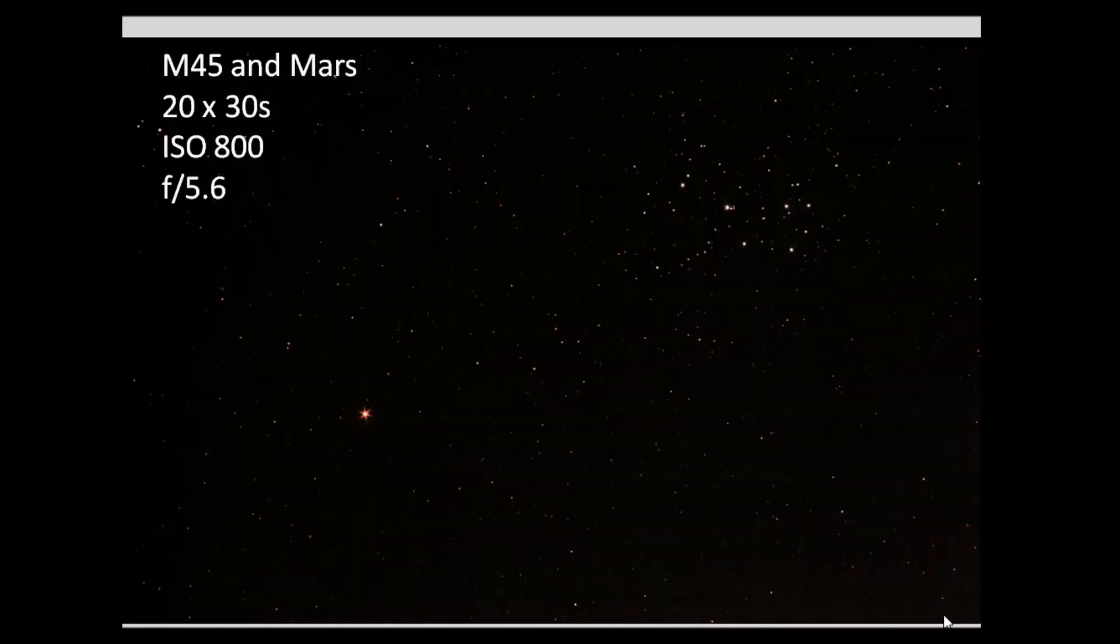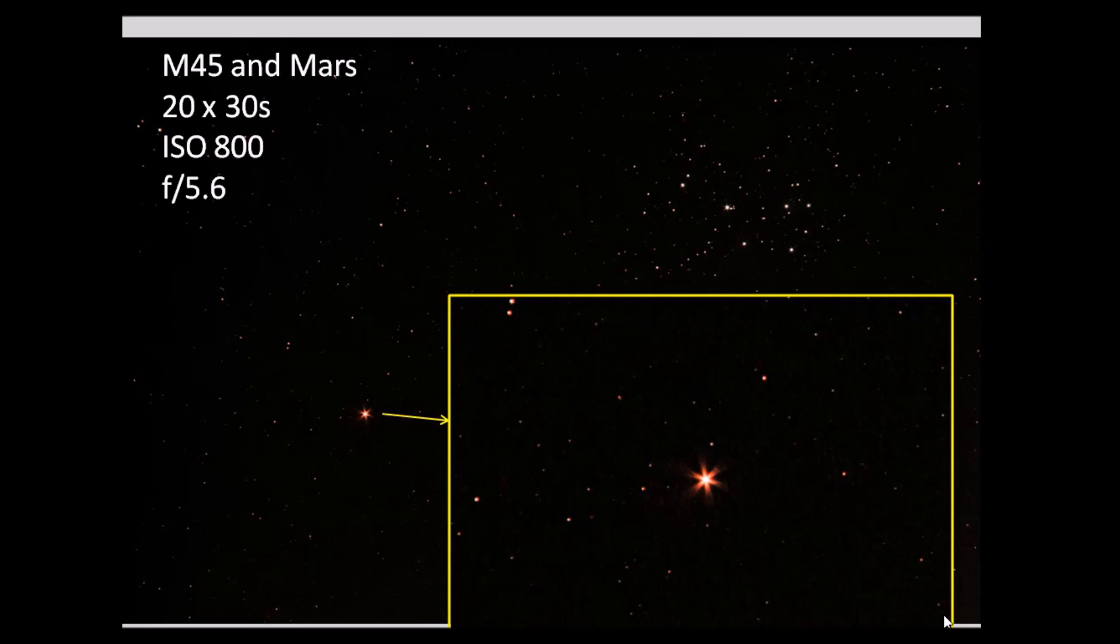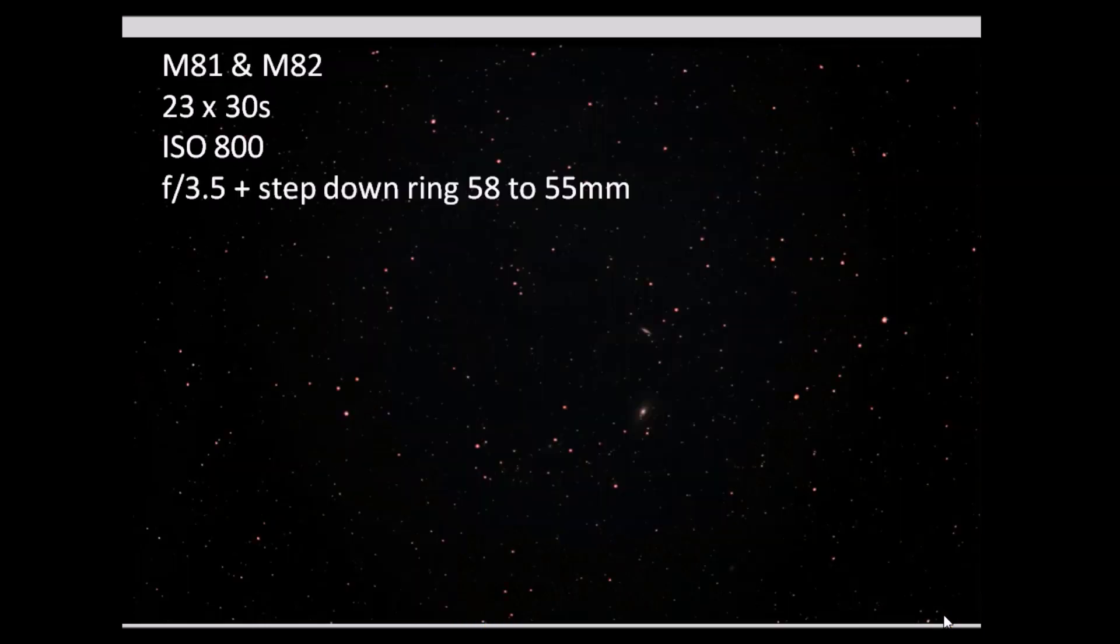So I took a few frames of that Mars and Pleiades conjunction. Again, you can see this is without the step-down ring and you can see that you've got quite a lot of spikes on Mars. So that's not really satisfactory to me. Maybe it looks quite nice on a star cluster, but not when you've got a planet. So for the remaining frames, I adopted the approach of using the step-down ring instead.